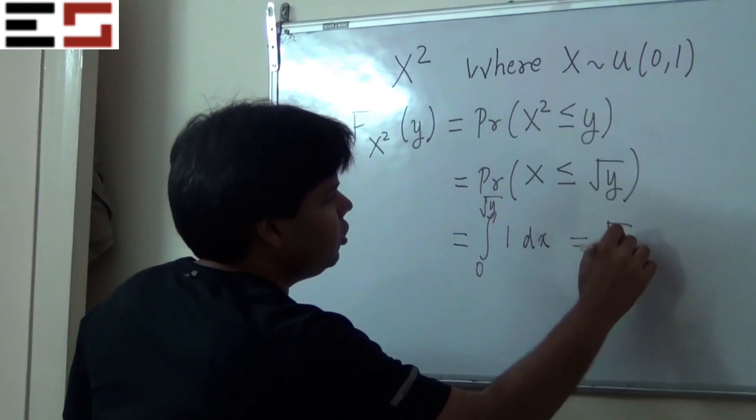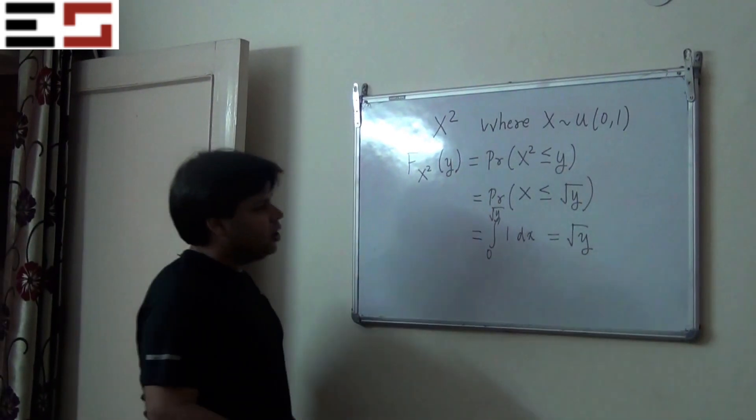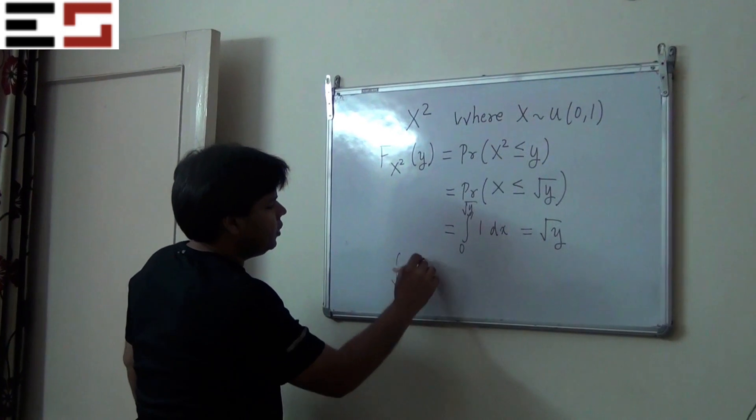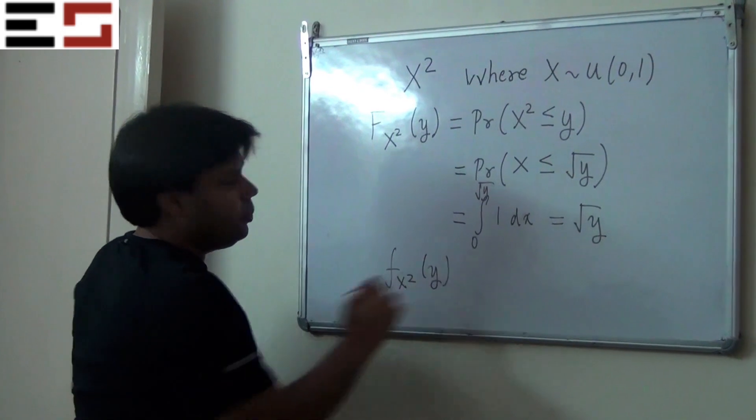This is going to give us root y. So we have the CDF of x squared. Now in order to find the PDF of x squared, we are going to just differentiate the CDF with respect to y to get the PDF.